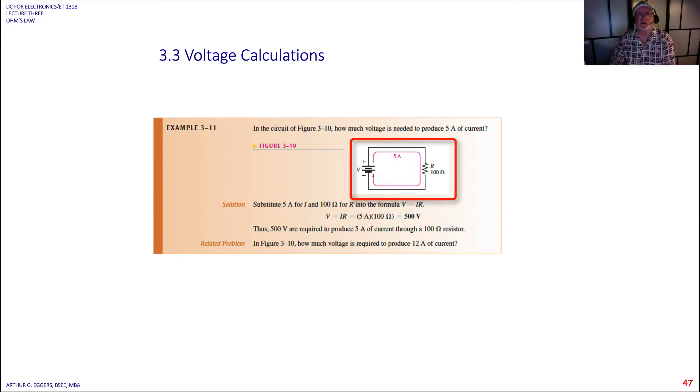In the simple circuit here you can see we're given two knowns, the current and the resistance. So 5 amps of current, 100 ohms of resistance. Get used to using those units because if you're not getting used to them you're going to become confused by them. So keep track of them.